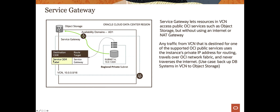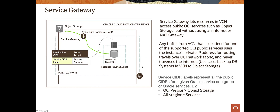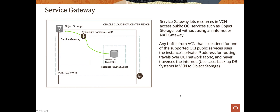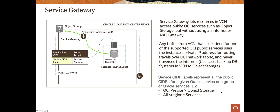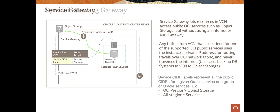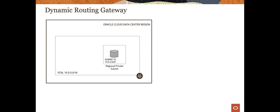For the route table with a service gateway, it looks a little different — you write in the service label. The object you're trying to connect to has a label, and you use that in your destination. The syntax would be something like 'OCI [region] Object Storage' as your destination CIDR. As soon as anything in the subnet sees that, the route table routes it through the service gateway. Good use cases include backing up your database to object storage — you can do that without ever putting that data out on the Internet, which matters for security, regulatory, or compliance reasons.